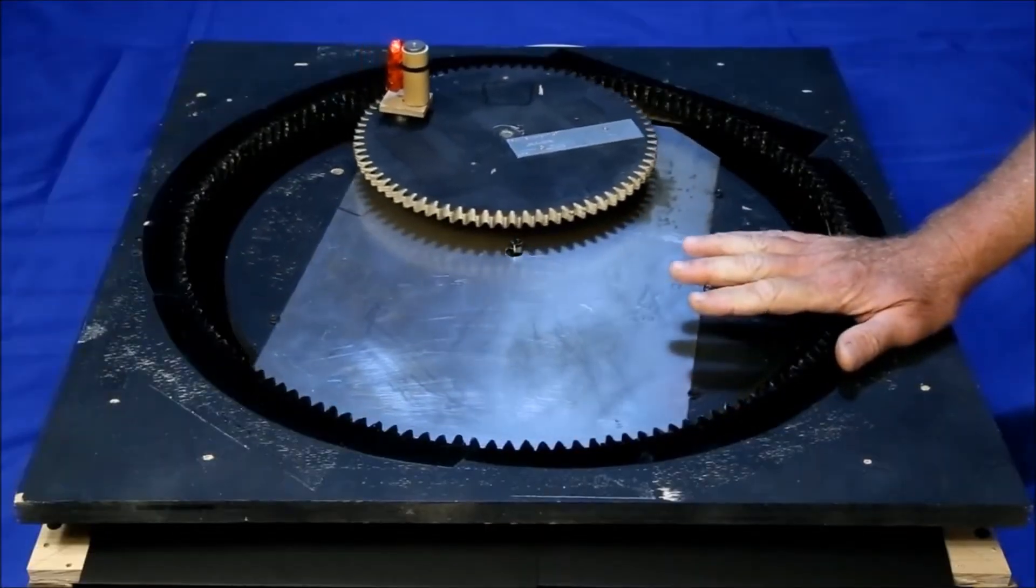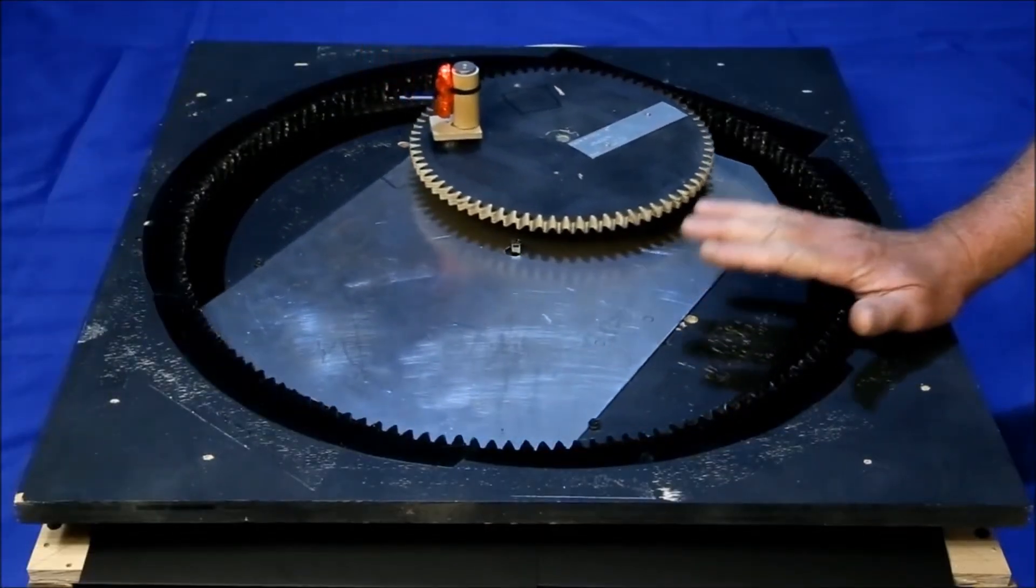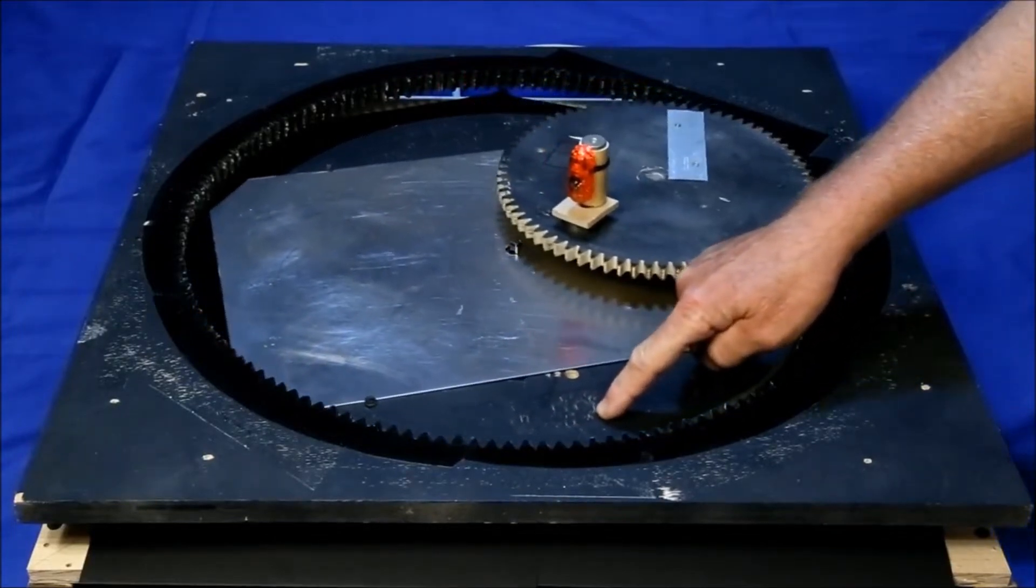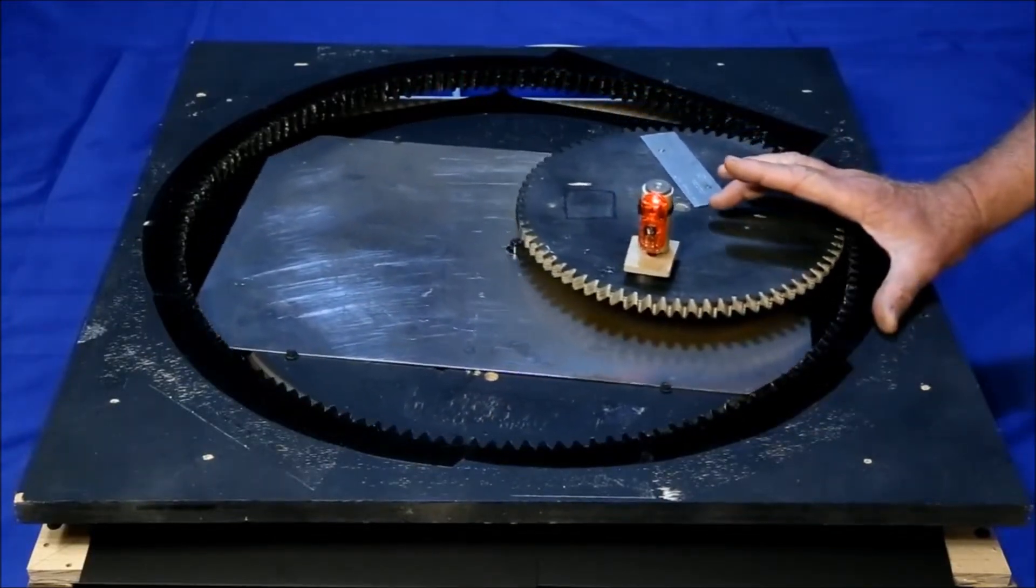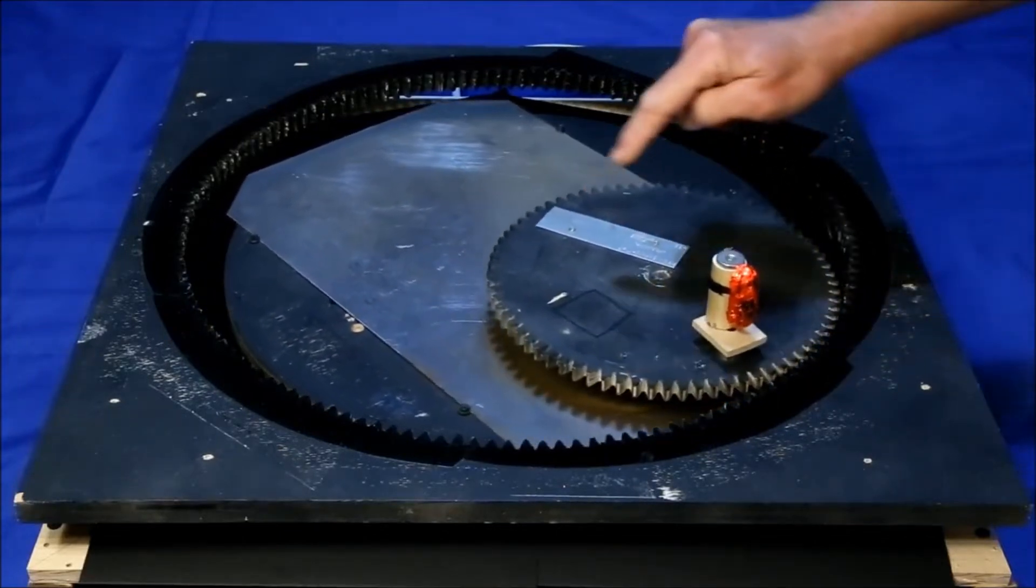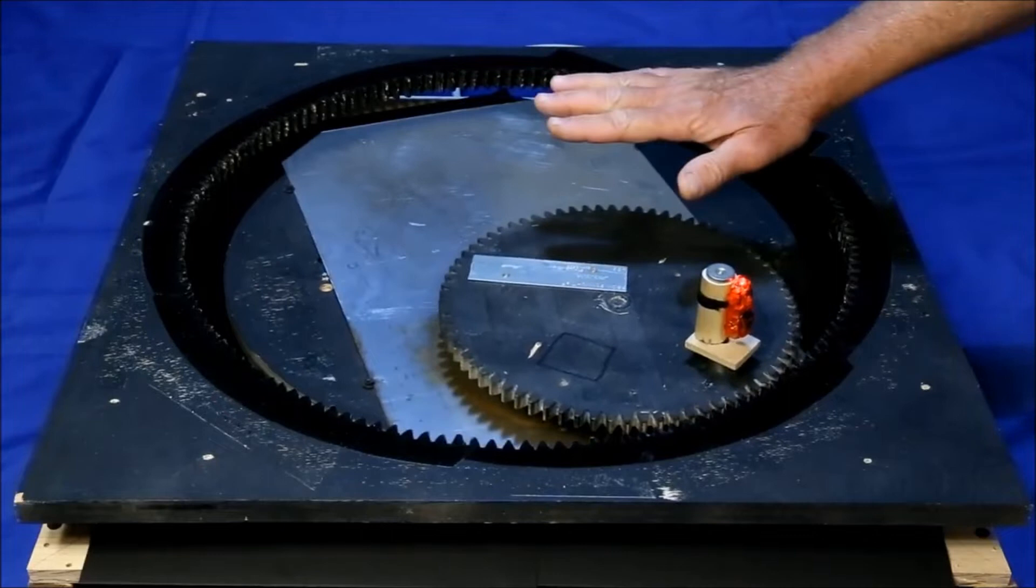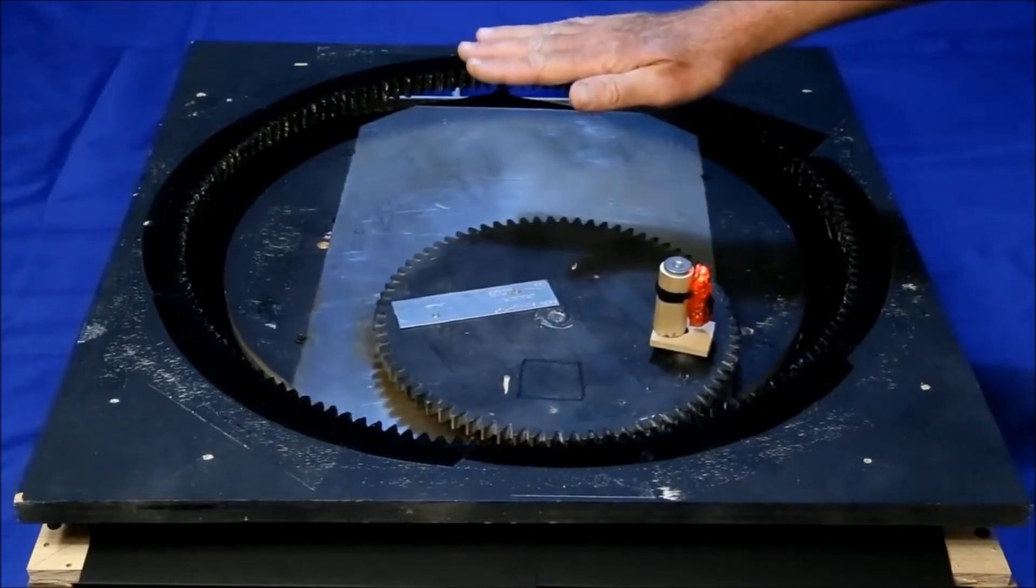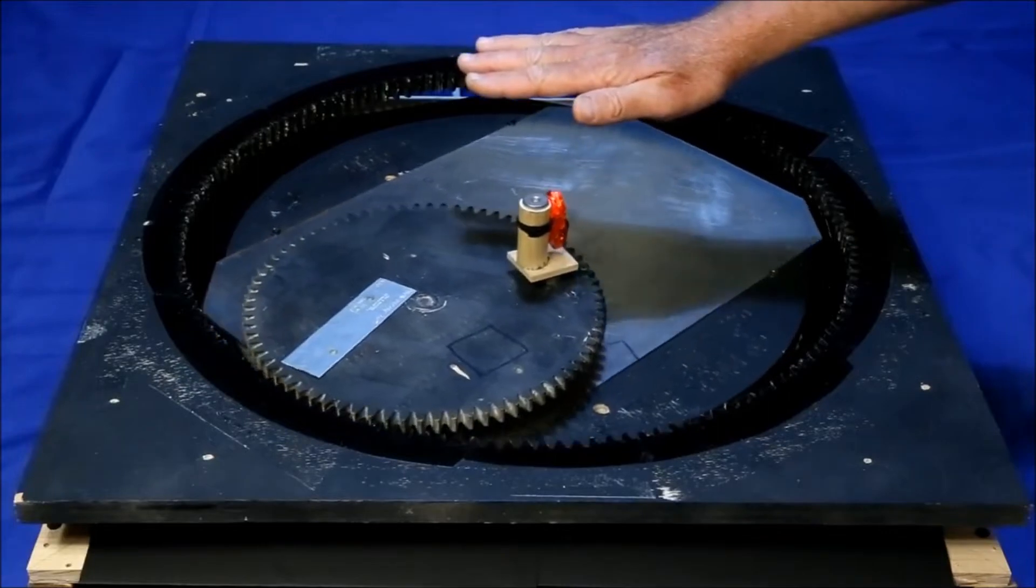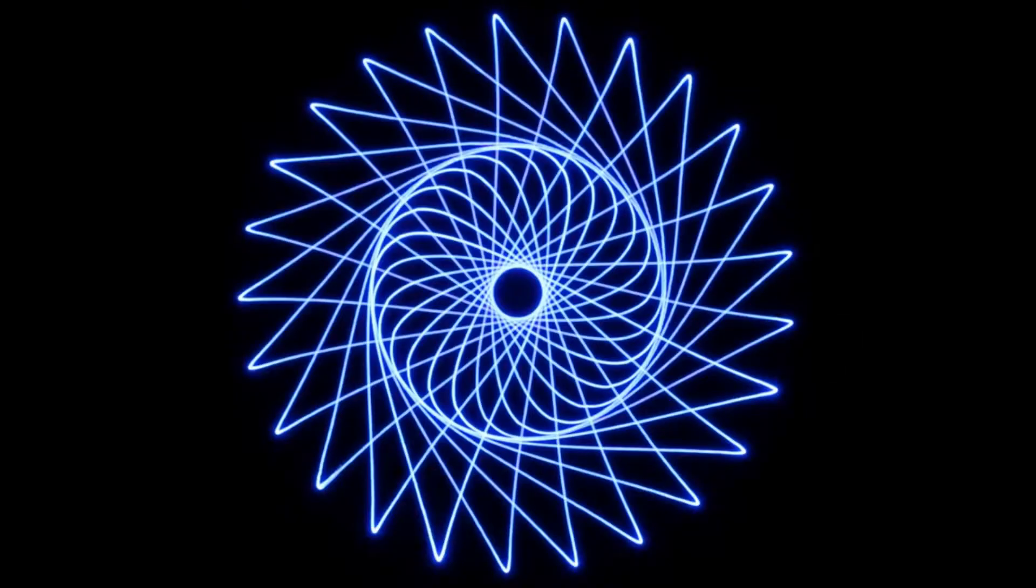In case you haven't seen the first video about the Illumicon, this drawing machine works by using a motorized turntable and sets of gears to move a miniature light in complex patterns. These patterns are recorded by a camera positioned above the machine with its shutter locked open to produce images like this and this.